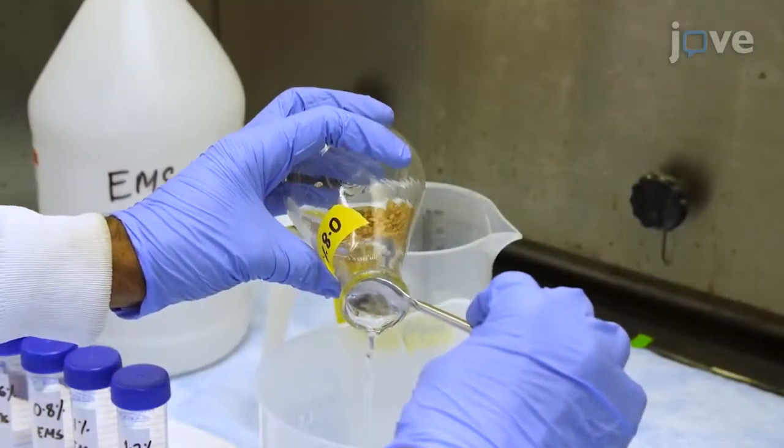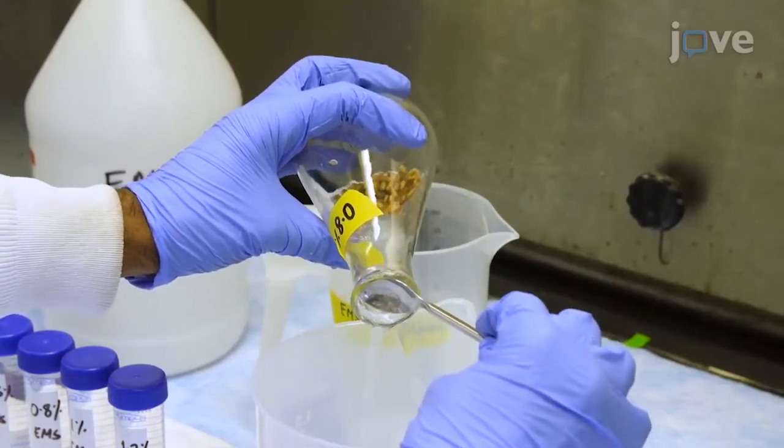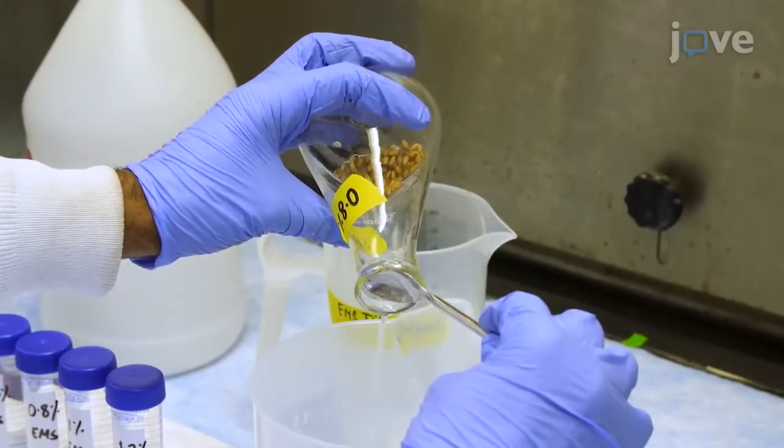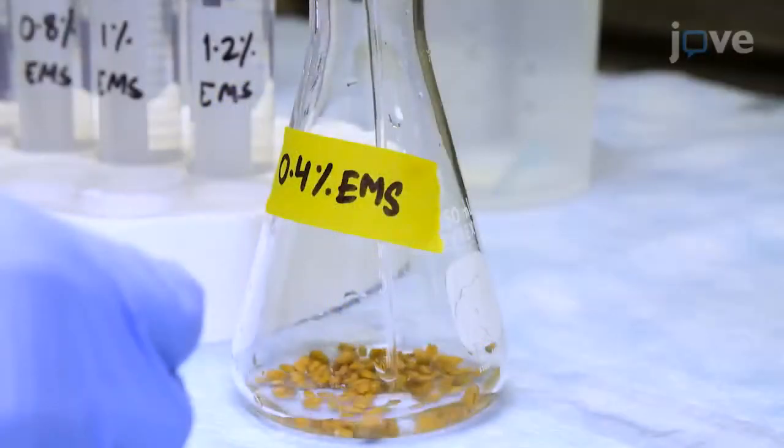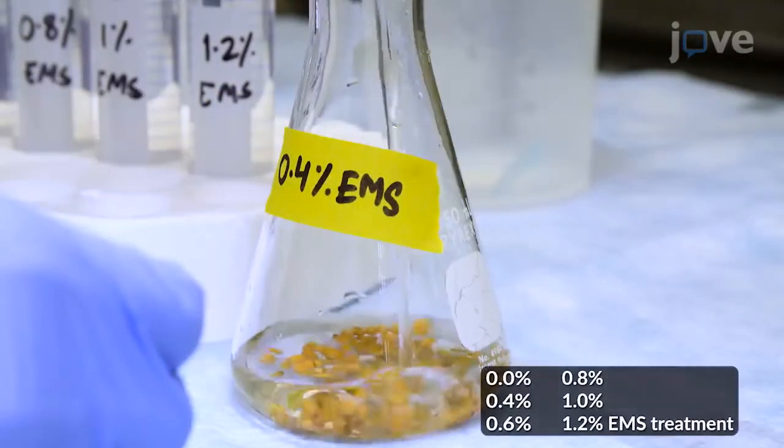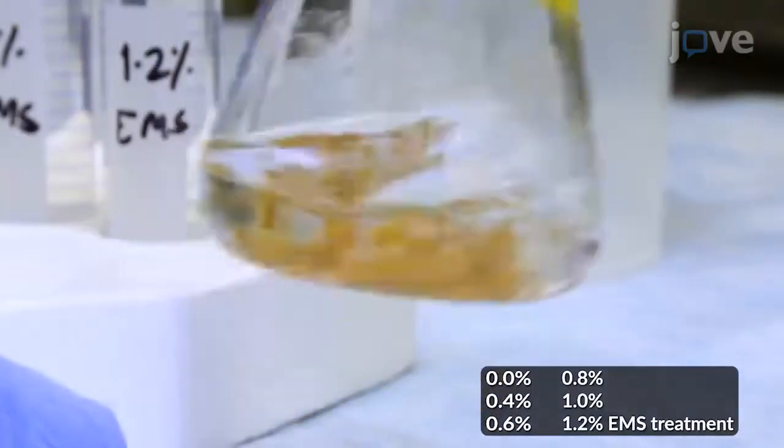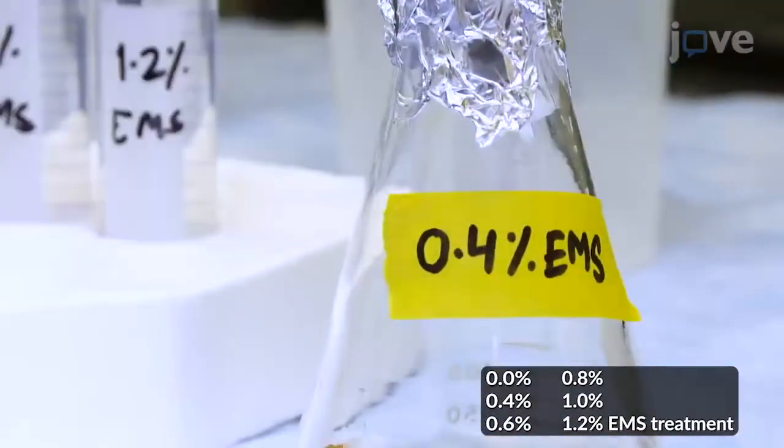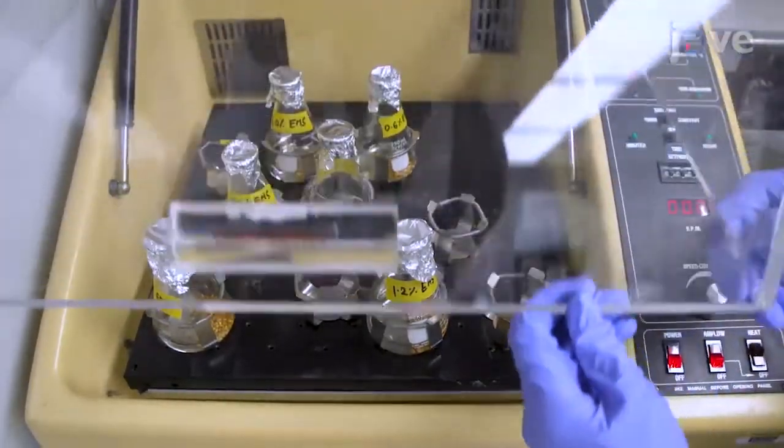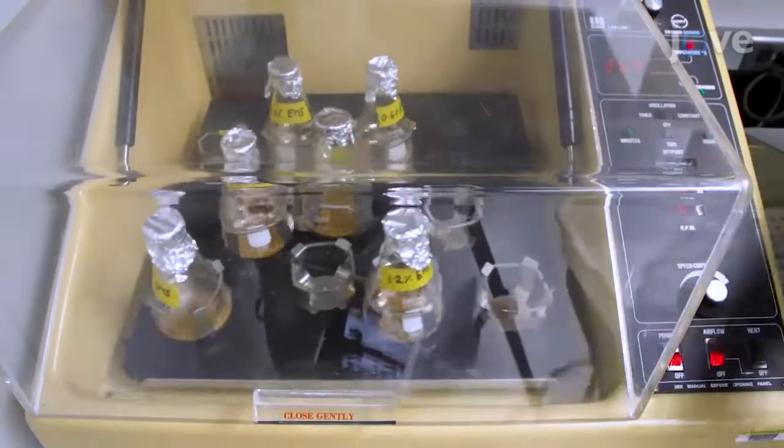After imbibition, decant the water out of 5 flasks. Add 50 milliliters of EMS solution in each of the 5 flasks containing imbibed seeds. Shake the flasks for 16 hours at 75 rpm and room temperature.